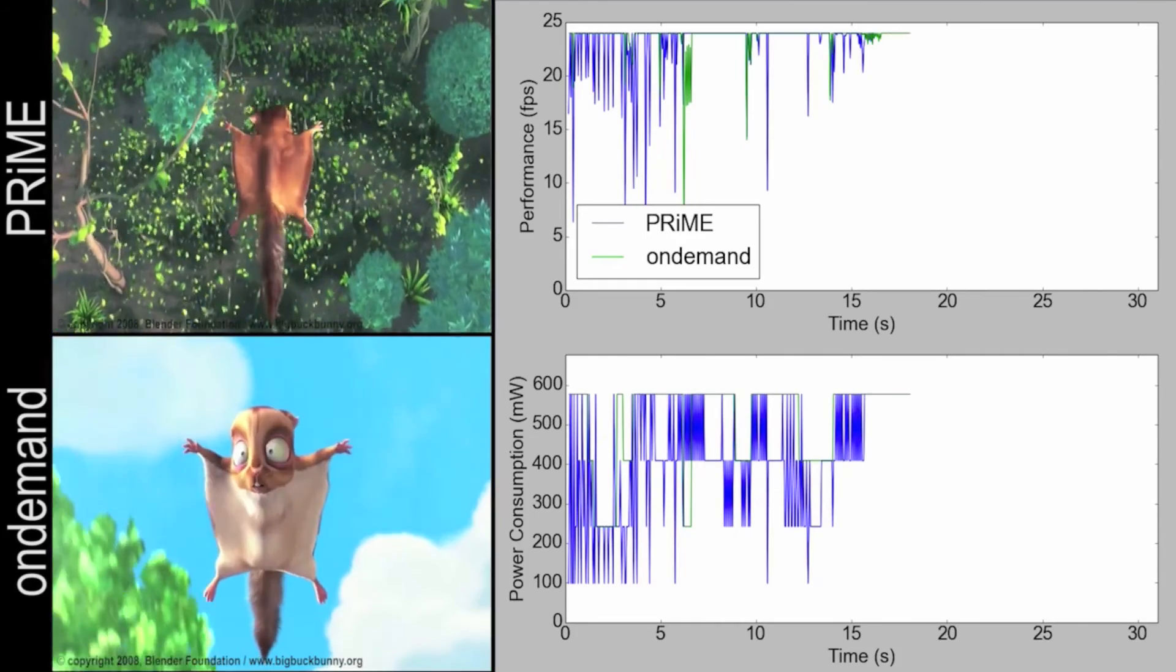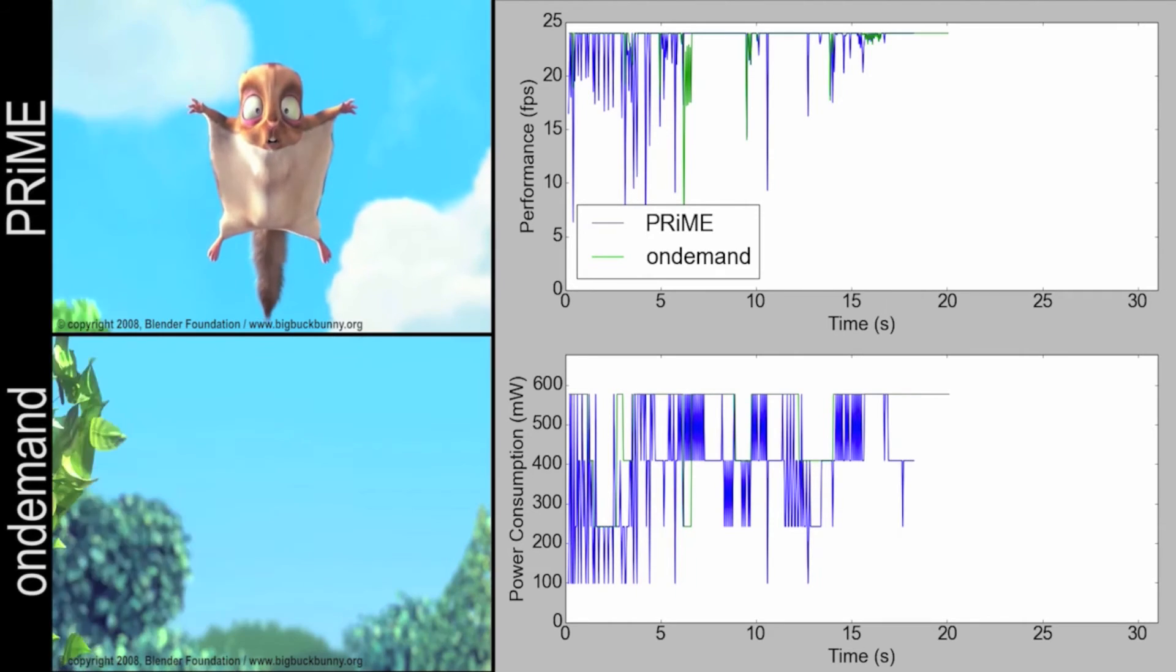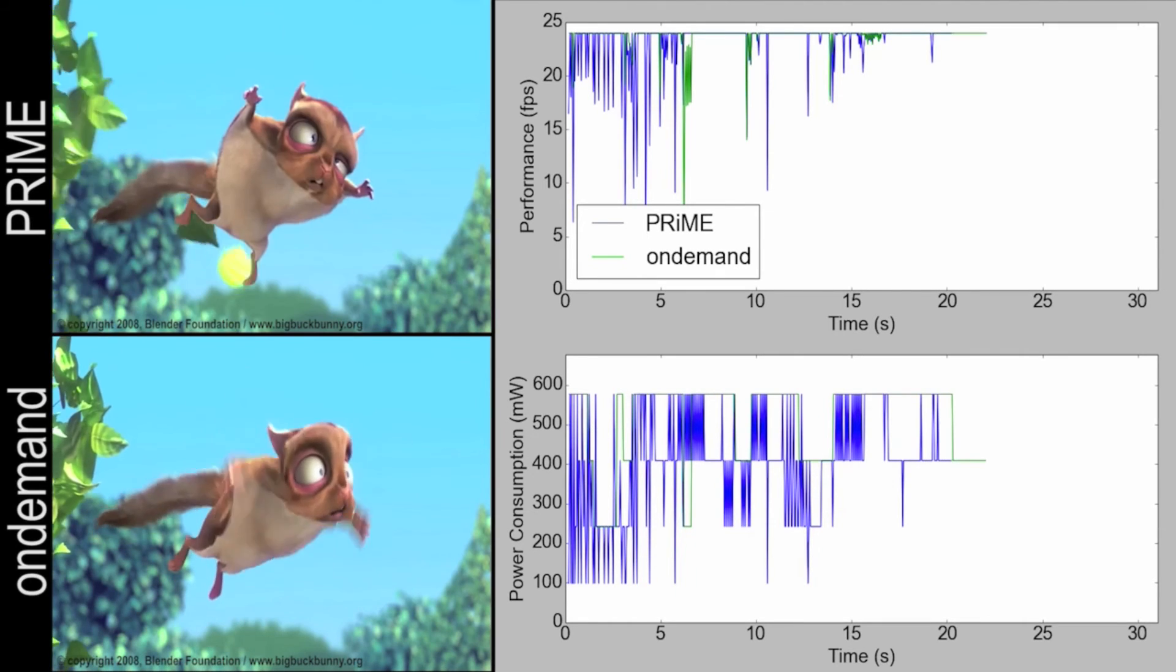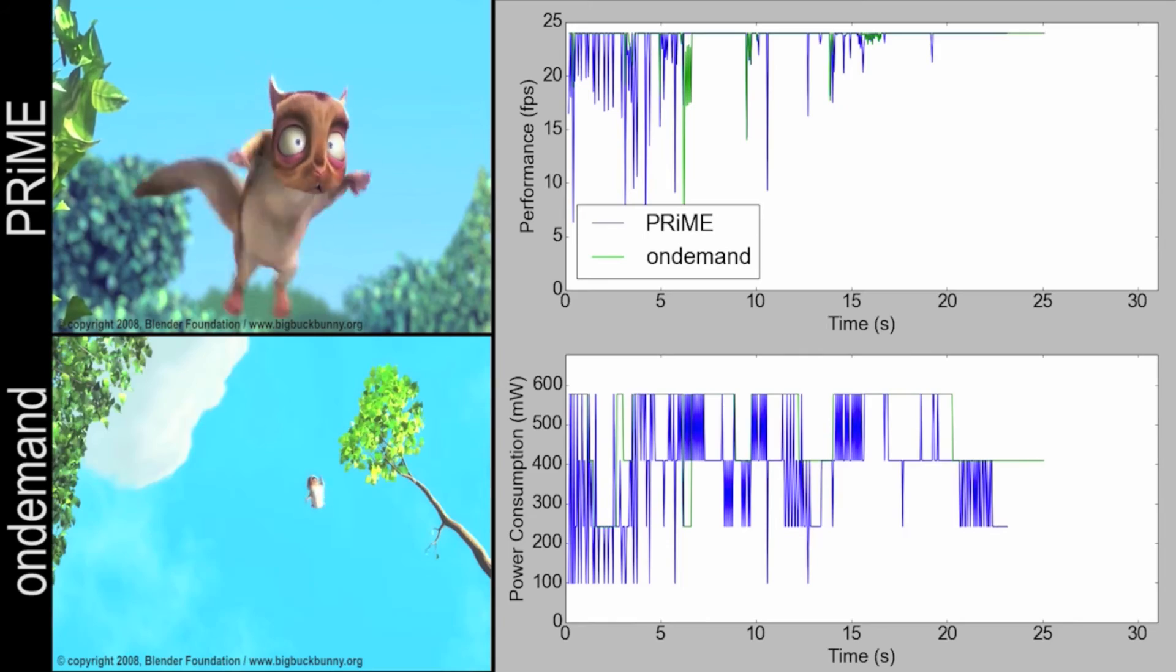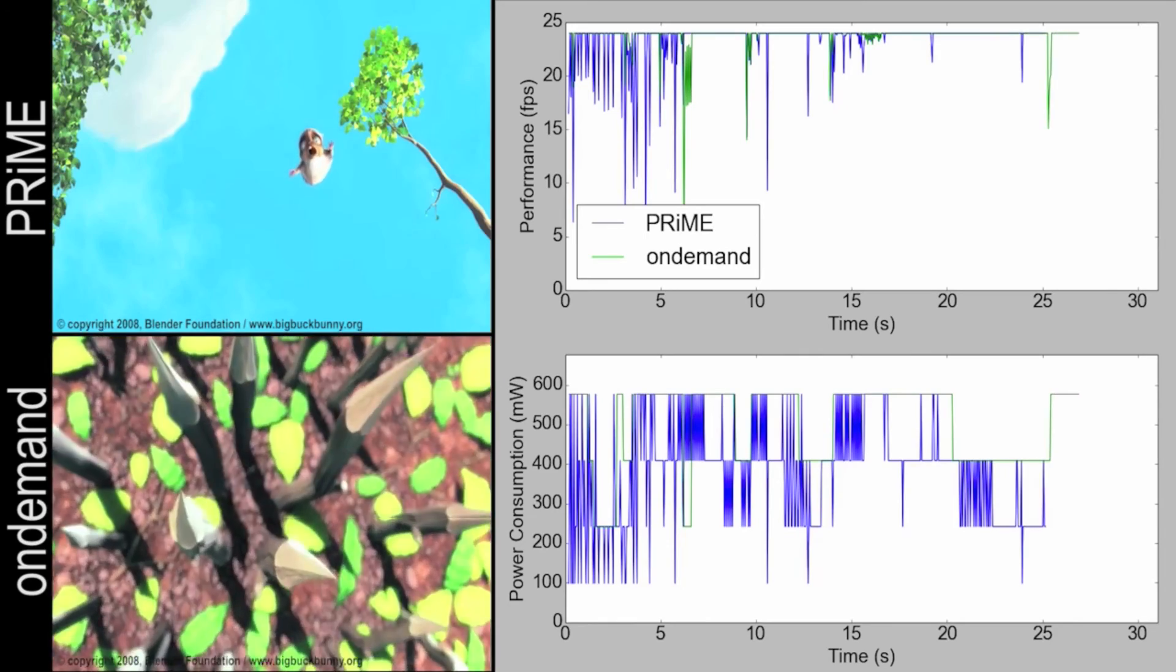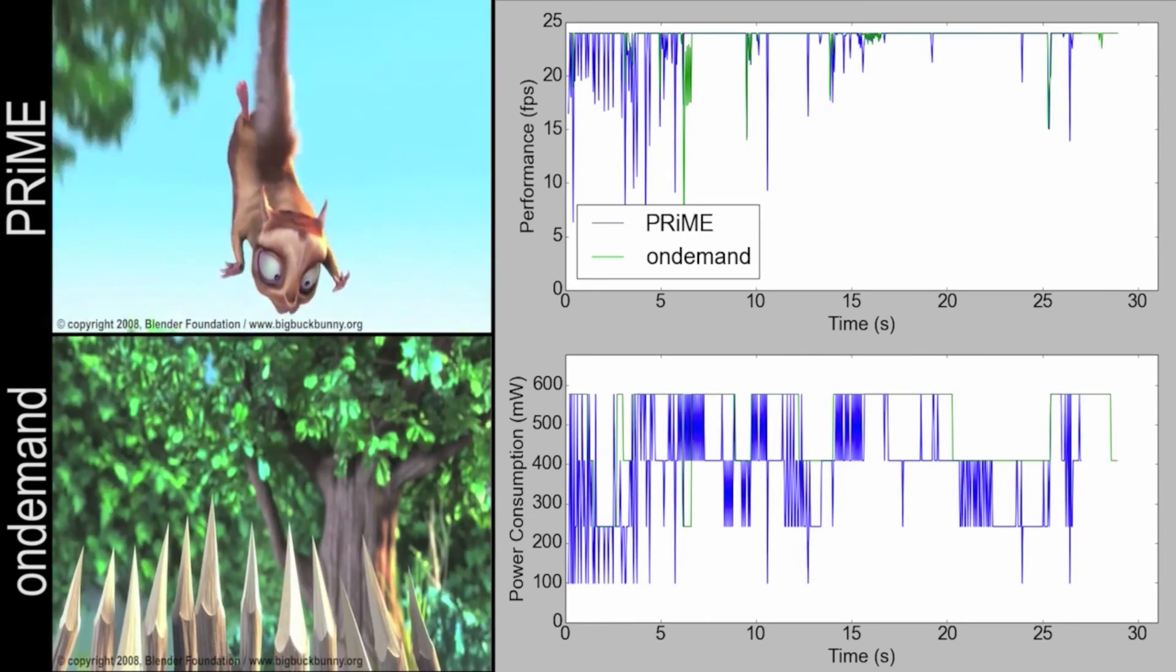But after a couple of seconds it is able to predict this very well, and it's able to keep up with the desired frame rate. And you can see that there's only a few occasions where the blue line drops significantly from that 24 frames per second rate.